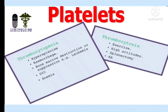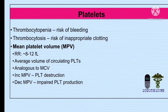Thrombocytosis — the suffix '-cytosis' indicates a large number count of particular blood cells. So thrombocytosis means platelets that are above the normal range, obviously greater than the normal range. Some conditions that cause thrombocytosis include exercise, high altitude, splenectomy, and RA, which is rheumatoid arthritis.